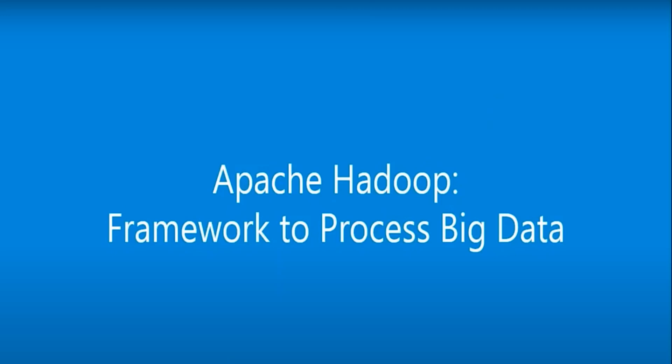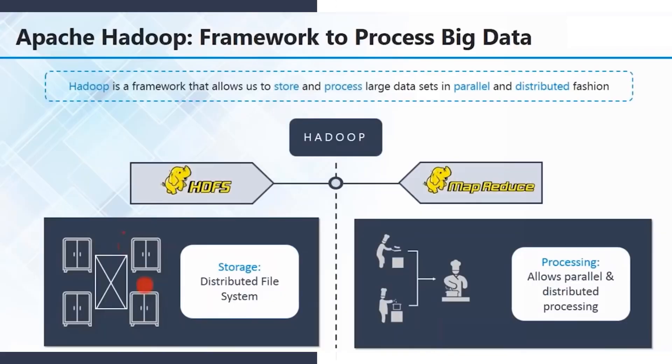There are two major problems in dealing with big data: the first problem is storage and the second is processing. To solve the storage problem we have HDFS, and here are the two basic solutions — first is HDFS, which is the storage solution, and second is MapReduce, which is the processing solution of big data.